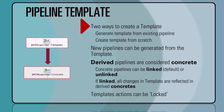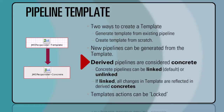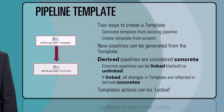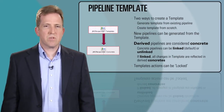There are two ways to create a template. We can generate the template from an existing pipeline, or we can create a template from scratch. New pipelines can then be generated from that template, and a derived pipeline is considered concrete. It can be linked or it can be unlinked. A linked pipeline takes the changes from the template, meaning that once we've created the pipeline from the template, if we make a change to that template, those changes will be carried through to the pipeline.